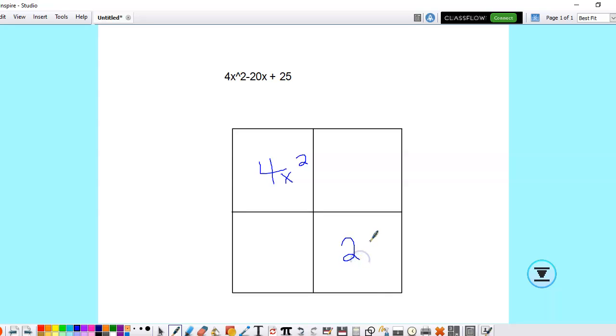So you'd have your 25 here, and then multiply these two together. And so you'd have 100x squared, and so what you're looking for is two numbers that multiply to 100x squared that also add to negative 20x.